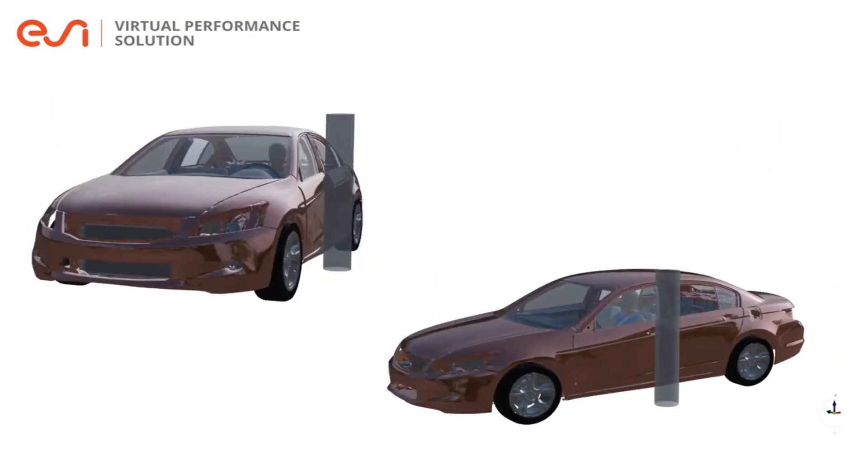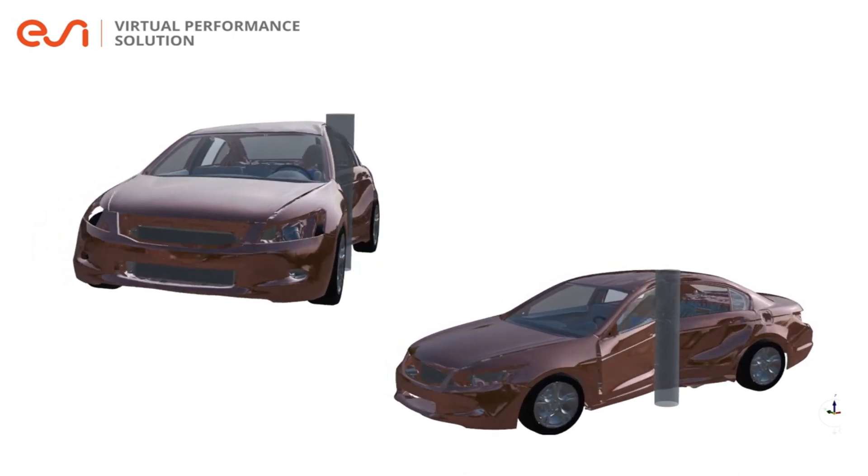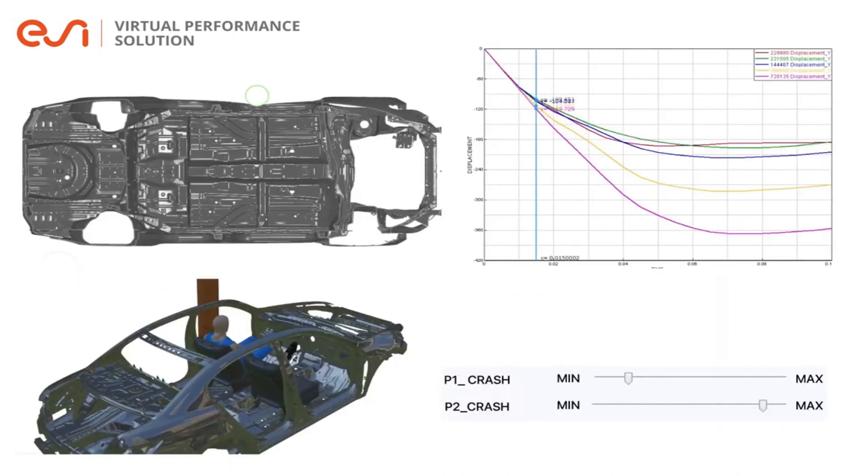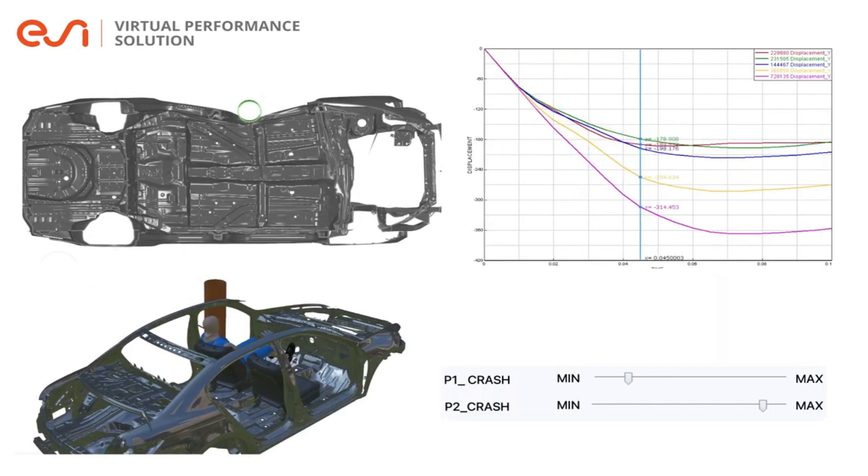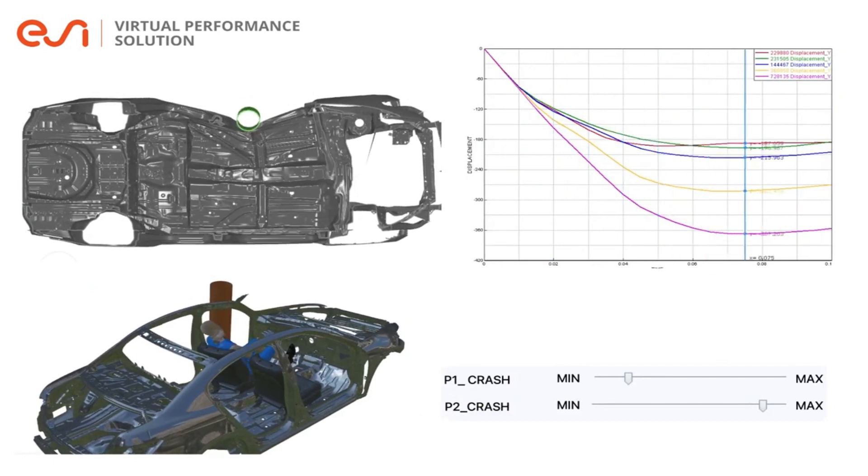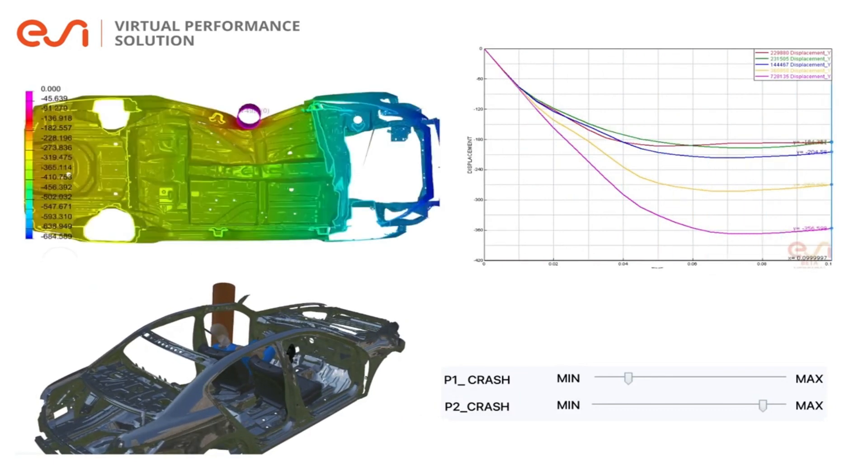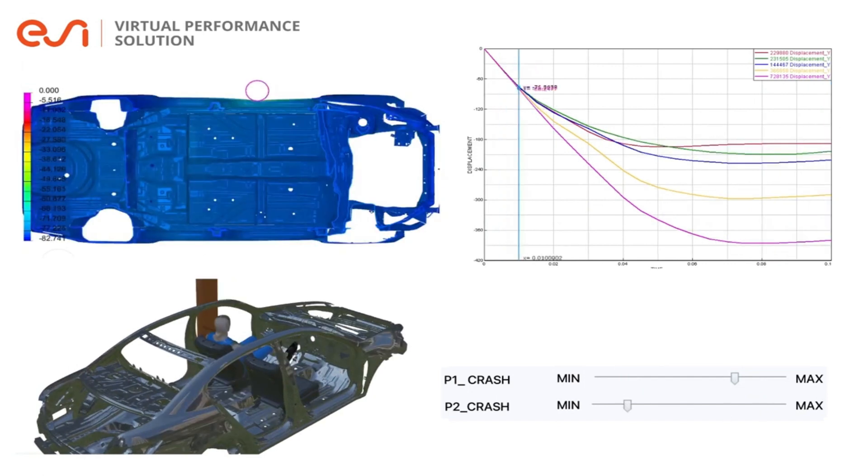Experts explore several design choices, such as materials or thickness under various conditions. ESI model order reduction enables fast parametric analyses. Design space is explored in real-time, based on quantities of interest, such as intrusion curves to quantify the passenger's safety.